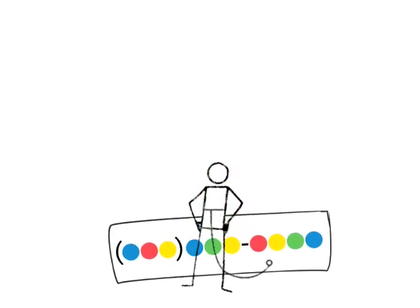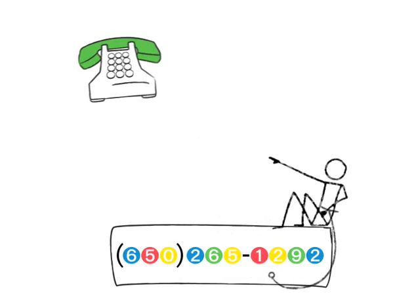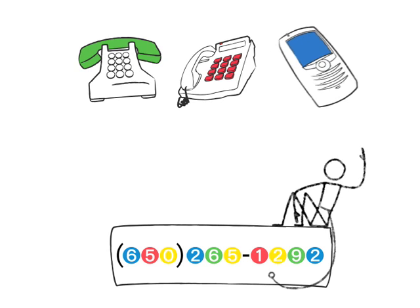When somebody calls you, they just call your Google number, and they don't have to decide to call you at home, work, or on your cell.